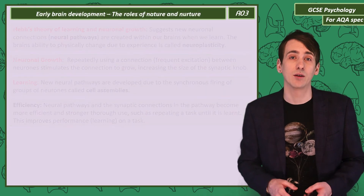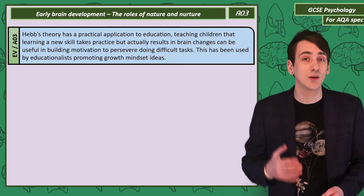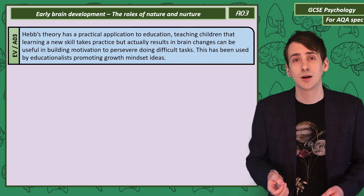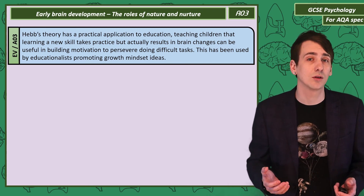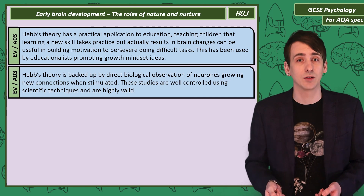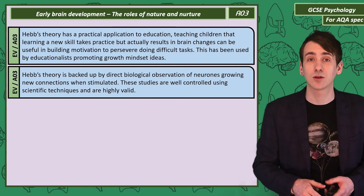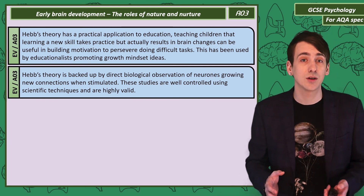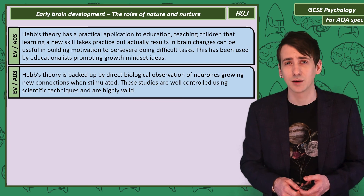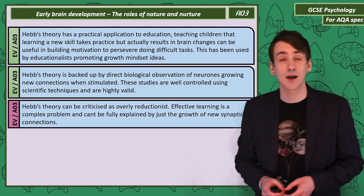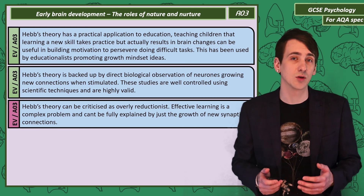Let's evaluate Hebb's theory. Hebb's theory can be applied to education — the ideas behind growth mindset suggest that improvements in performance are due to increased effort, which is directly supported by Hebb's ideas about neuronal pathways becoming more efficient with use. There is also direct biological evidence: observations under the microscope show neurons growing new connections when electrically stimulated. Biological research is performed with precise tools under careful controls, making this strong evidence. However, Hebb's theory can be criticised as being overly reductionist, as effective learning is complex and can't be fully explained just by the growth of new synaptic connections.